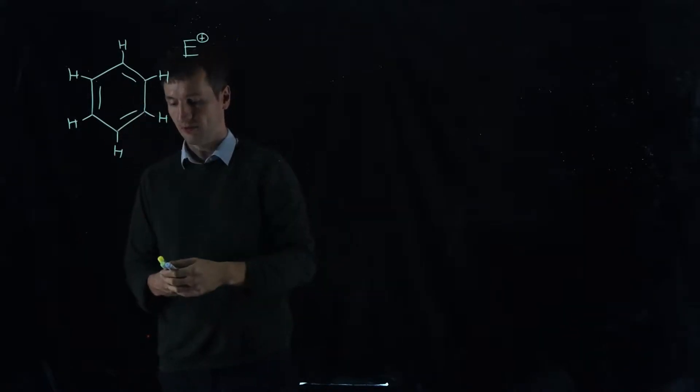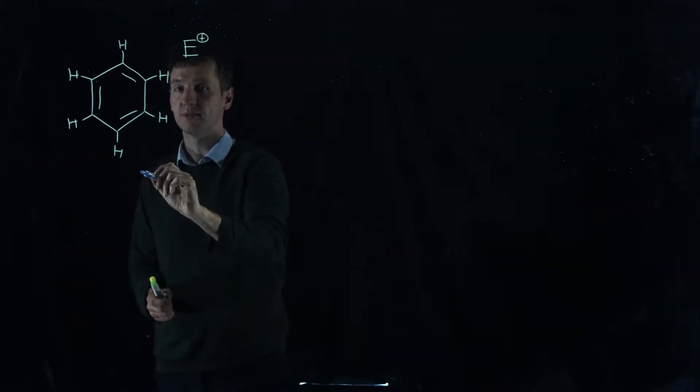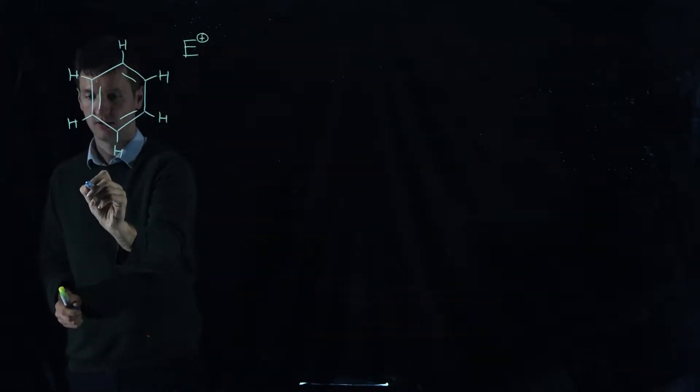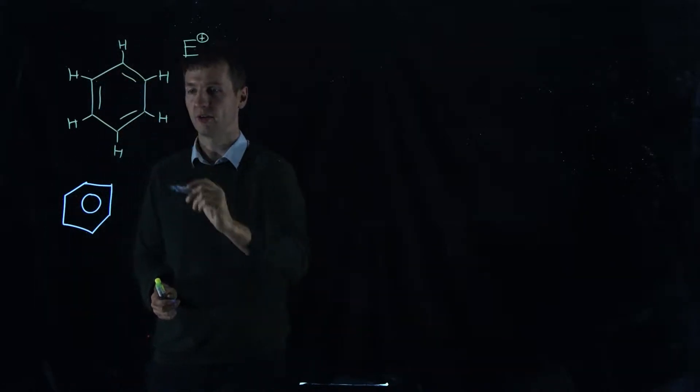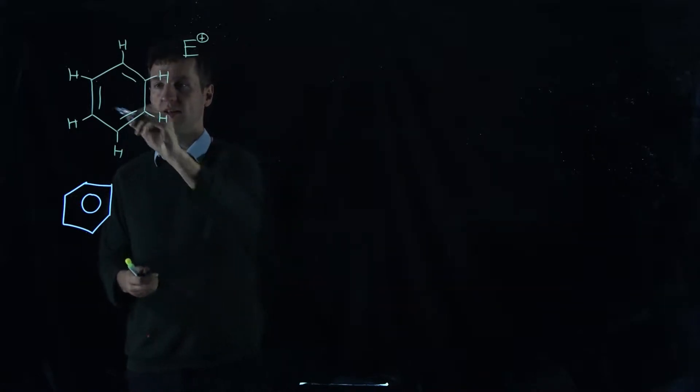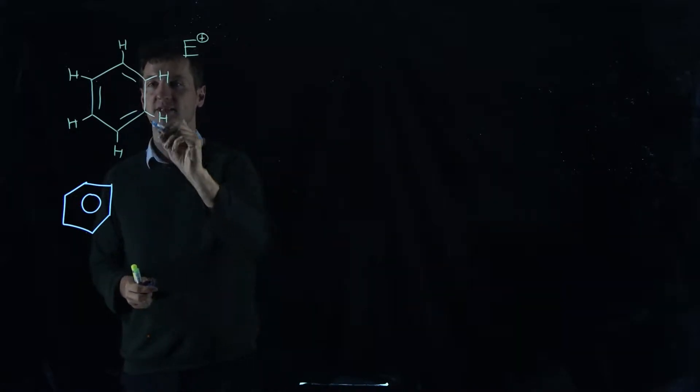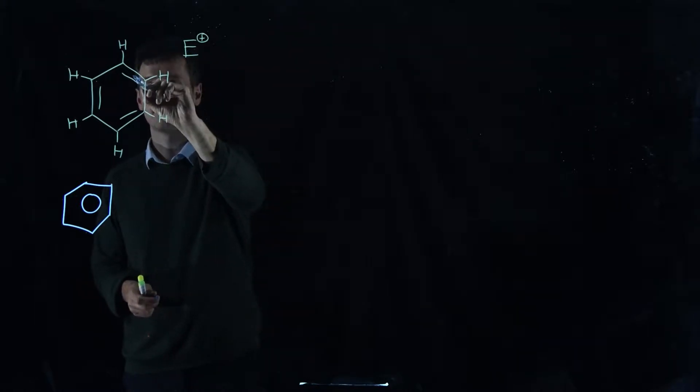We're going to draw out one of the resonance forms of benzene. We know that these are actually resonating around, and sometimes you'll see benzene represented using this. That's perfectly acceptable normally, but it won't help us draw out our mechanism. So draw it with the double bonds in place, and the first thing that's going to happen is if this is our electrophile, our nucleophile is going to attack it. Break this carbon-carbon double bond and form a new carbon-electrophile bond.